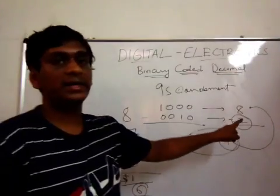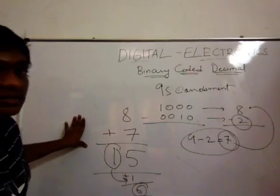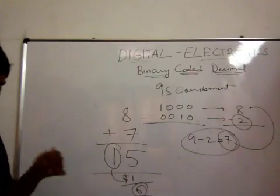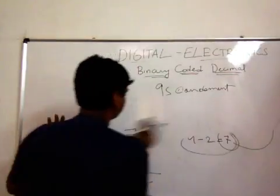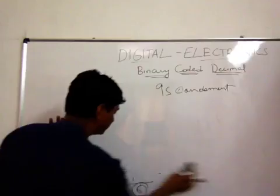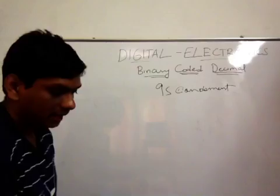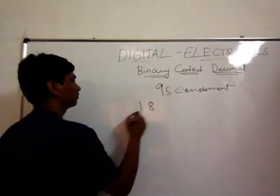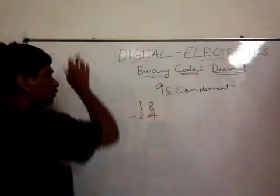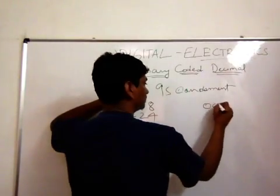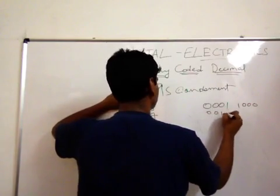Take this carry and add it here: five plus one equals six. So six is the difference of eight and two. This is how you approach problems using the nines complement method. Now let us do another example — let us take 18 minus 24.